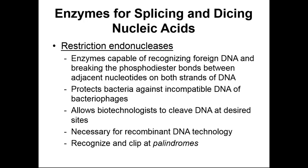The phosphodiester bond is the kind of chemical bond that holds the phosphate and the sugar backbone together in the DNA molecule. These restriction endonucleases serve an important function for the microorganism. If we take foreign DNA and insert it into an organism, the restriction endonucleases floating around in the cytoplasm are going to start chopping up that DNA. So restriction endonucleases are going to protect these microorganisms against viral attack — they protect bacteria against bacteriophages and other microorganisms against viral attack.